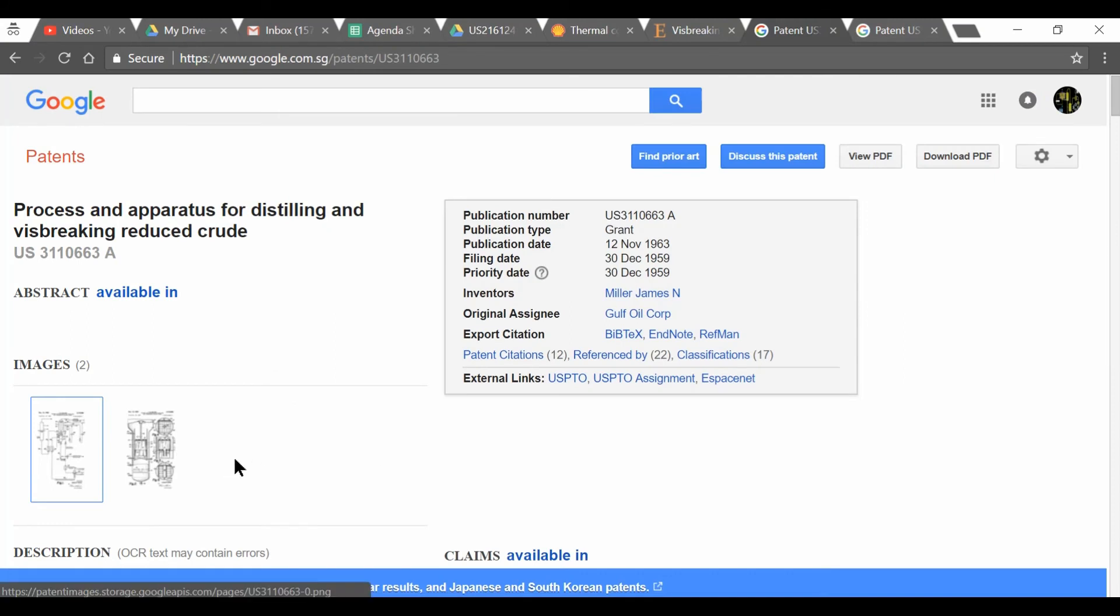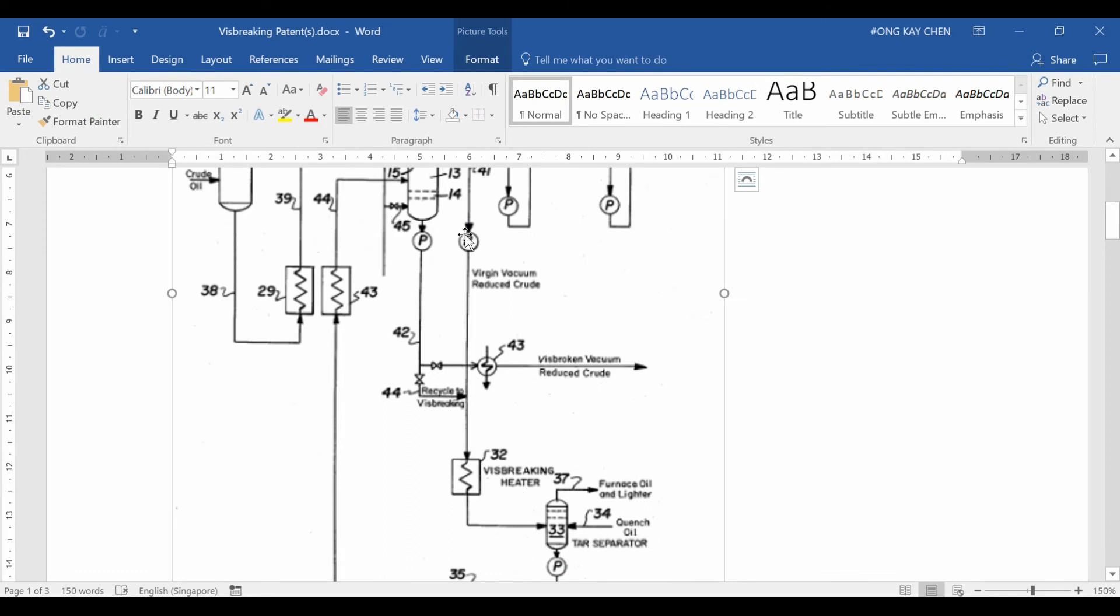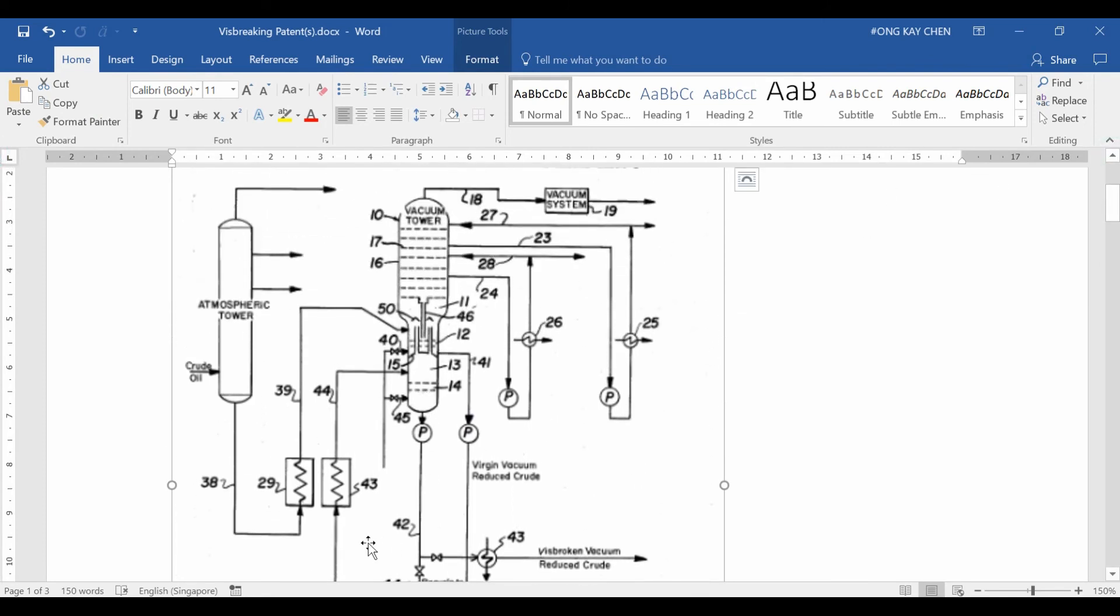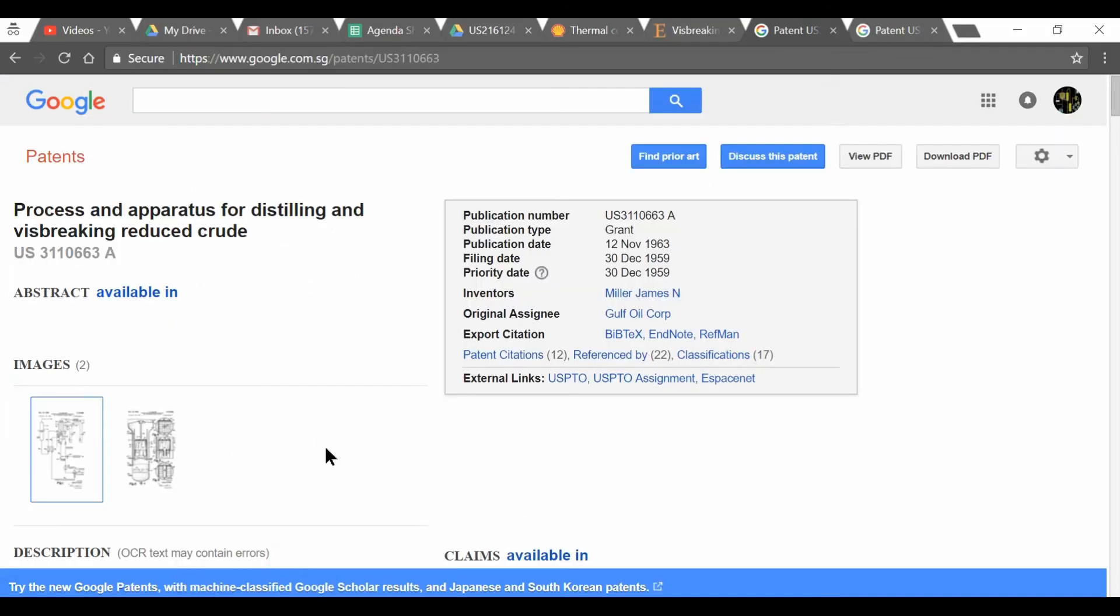Alternatively, you can recycle some of that back into the visbreaking heater so that you can convert more of the visbreaking oil one more time. Here you can see we have two ways of separating it, one using a separator using some quench oil, and you recycle it back into the vacuum tower. This is just one way you can do visbreaking depending on the cost. You can choose to arrange it this way. This is by Gulf Oil Corp, by Miller James N.